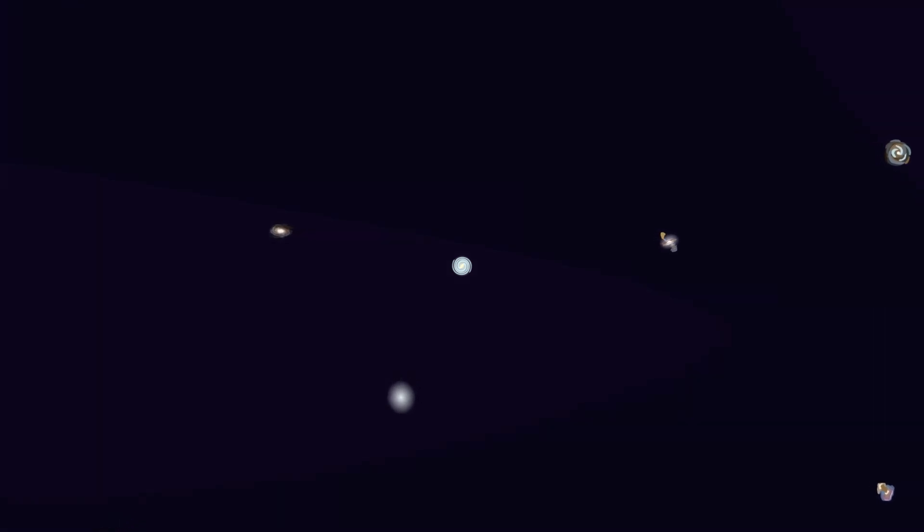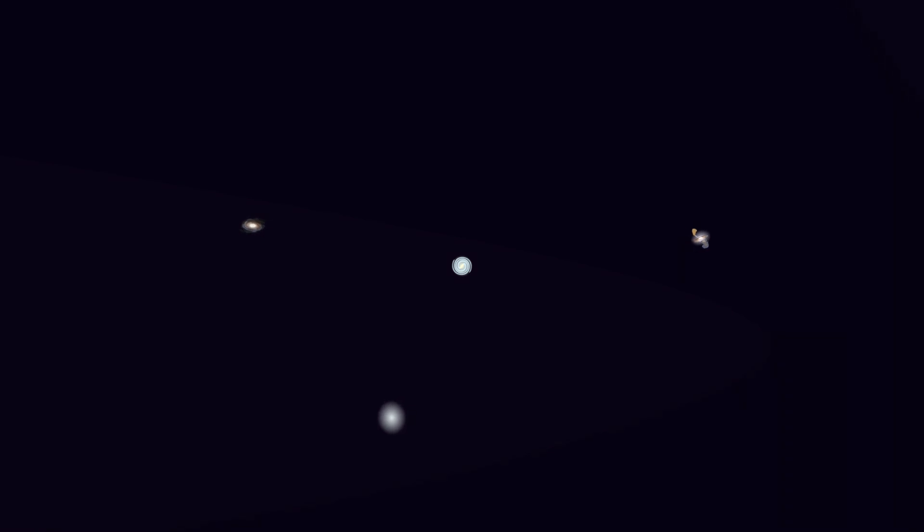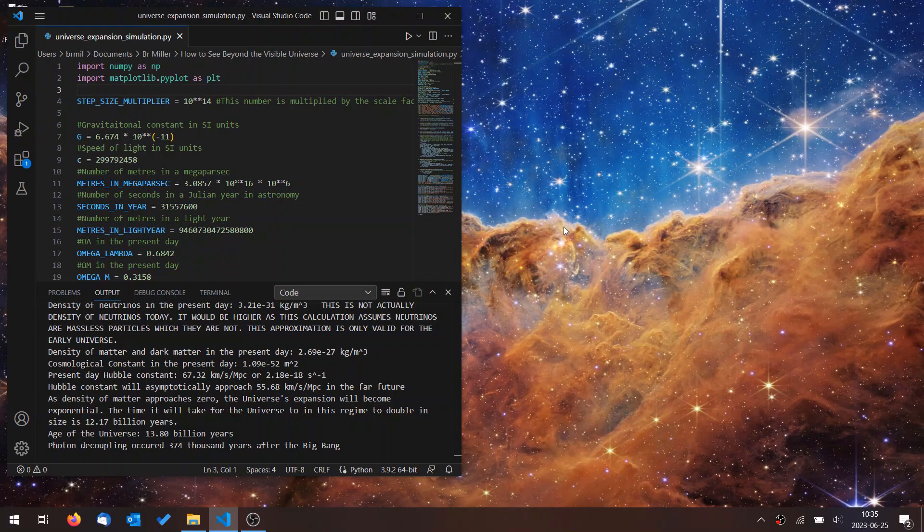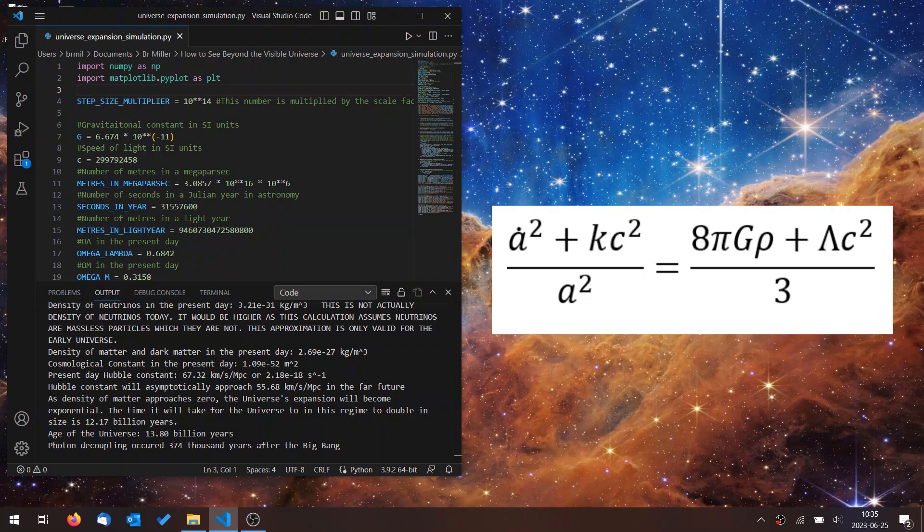The distance at which they move away from us faster than light becomes larger. Light that was moving away begins to move towards us. The gravitational attraction between galaxies slows the expansion. I made a simulation of the expansion of the universe using Python. I calculated this using the Friedman equation.